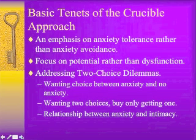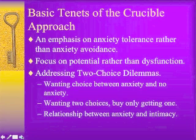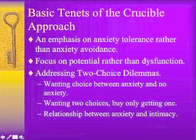Some of the basic tenets of a crucible approach: rather than what a lot of the older models did — trying to find ways to decrease anxiety — this model tries to help people increase their anxiety tolerance rather than avoid anxiety. It focuses on potential rather than just dysfunction, so even a couple doing well might benefit because there's always somewhere more to go. It addresses the two-choice dilemma, where clients want to change but want to stay the same — wanting two choices but really only getting one. It's helping people face the things they're avoiding and recognize it as a gift that can lead to better things.